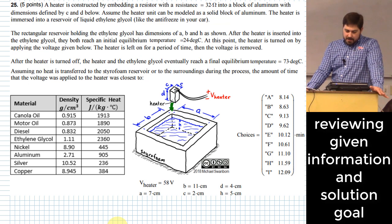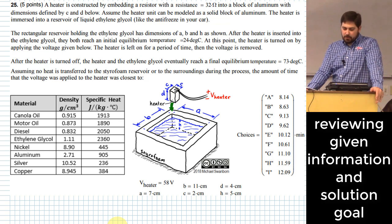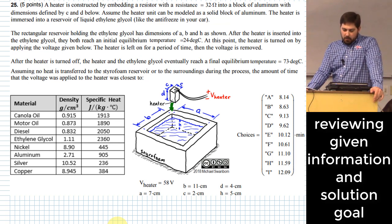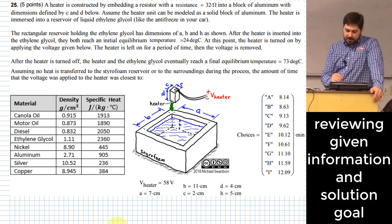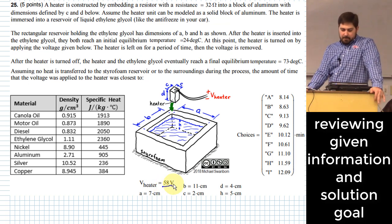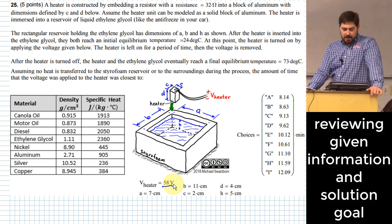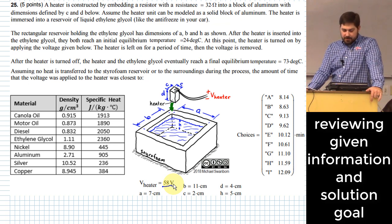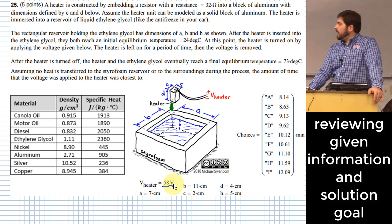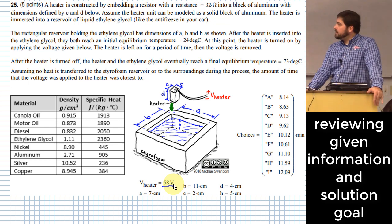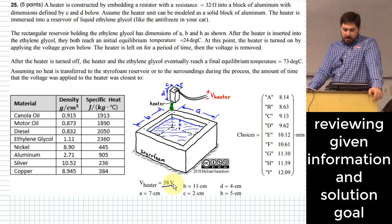The rectangular reservoir has the dimensions shown, and after the heater is inserted into the glycol, they both reach an initial equilibrium temperature of 24 degrees C. Once that happens, the heater is then turned on by applying the voltage given, 58 volts. The heater is left on for a while and then the voltage is taken off. After the heater is turned off, the heater and the ethylene glycol eventually reach an equilibrium temperature of 73 degrees C. We're going to assume that a negligible amount of heat is absorbed by the styrofoam reservoir or goes somewhere else besides in the bath. We need to know how much time the voltage was applied to the heater to make all of this happen.